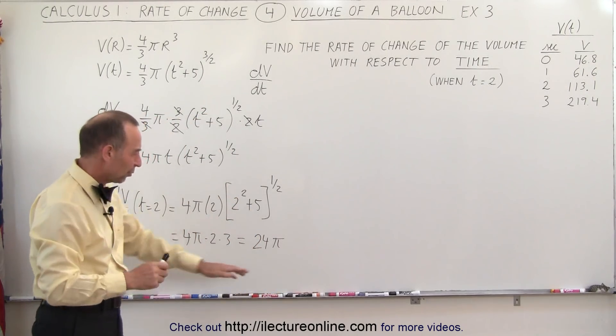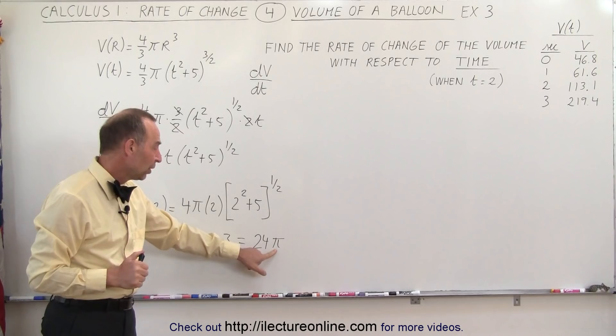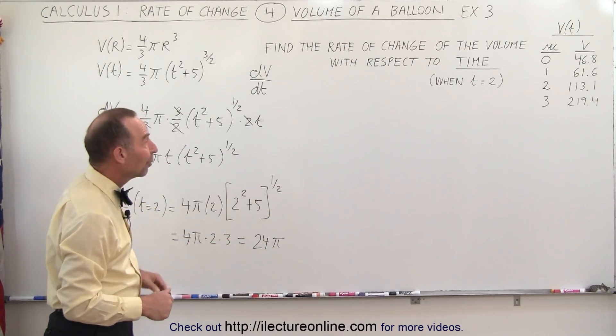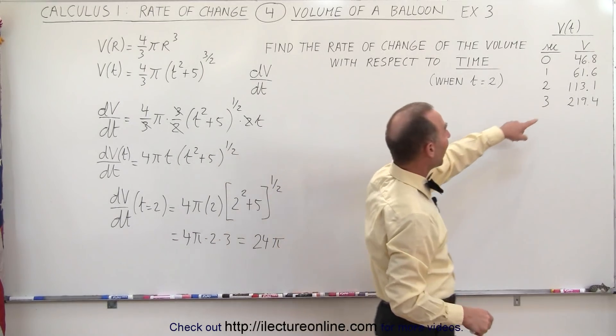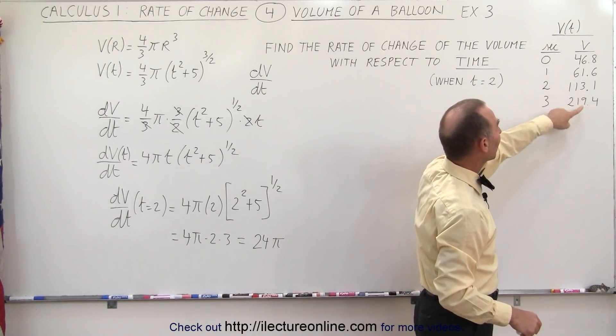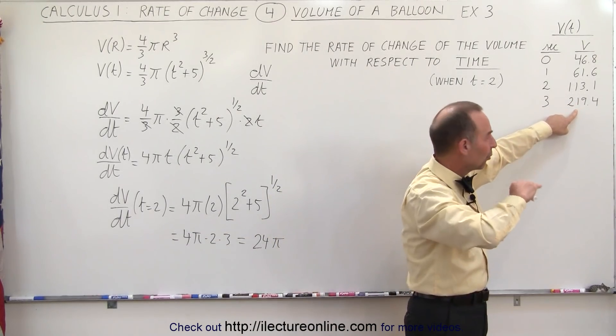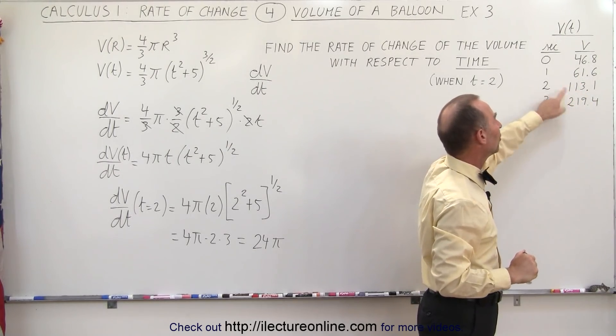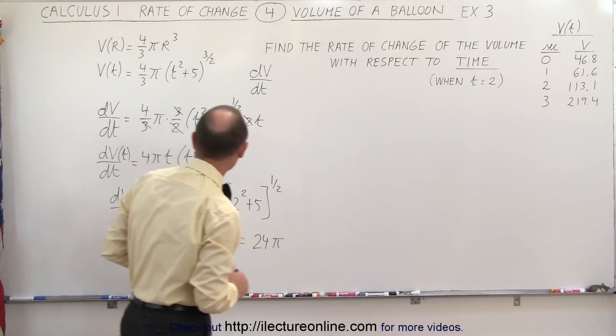Which is roughly—pi is a little bit more than 3—so you can say this is somewhere between 75 and 80. If we go over here and notice, if we add about 80 to this, we get almost the next value. Of course, we know that dv/dt is increasing over time as well, but you can see that seems to be a reasonable number.